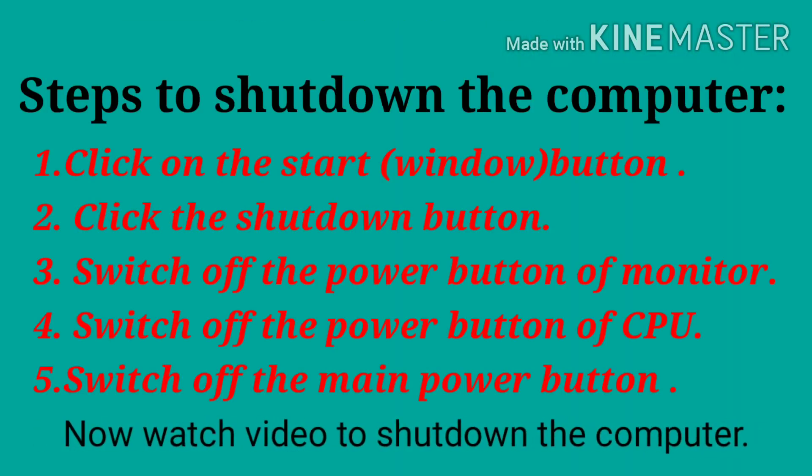So students, you have to follow these steps. Now students, we have to follow these steps to shut down the computer. First, click on the Start or Windows button. Second, click the Shut Down button. Third, switch off the power button of the monitor. Fourth, switch off the power button of the CPU. Fifth, switch off the main power button.